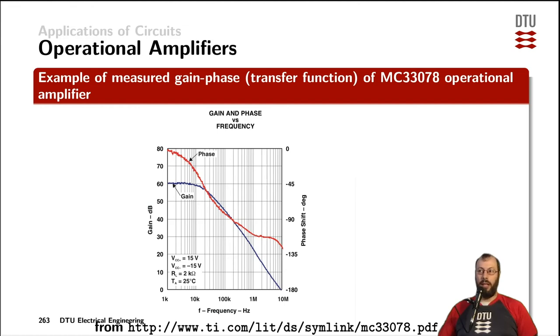Now let's have a look at an example, in this case the MC33078 operational amplifier, which is designed for audio use. In datasheets, the transfer function is also often called the gain phase diagram. From the gain, we can see that it has 60 dB gain as the low-frequency gain, which is a very representative number for many operational amplifiers. Some have also 80 dB.